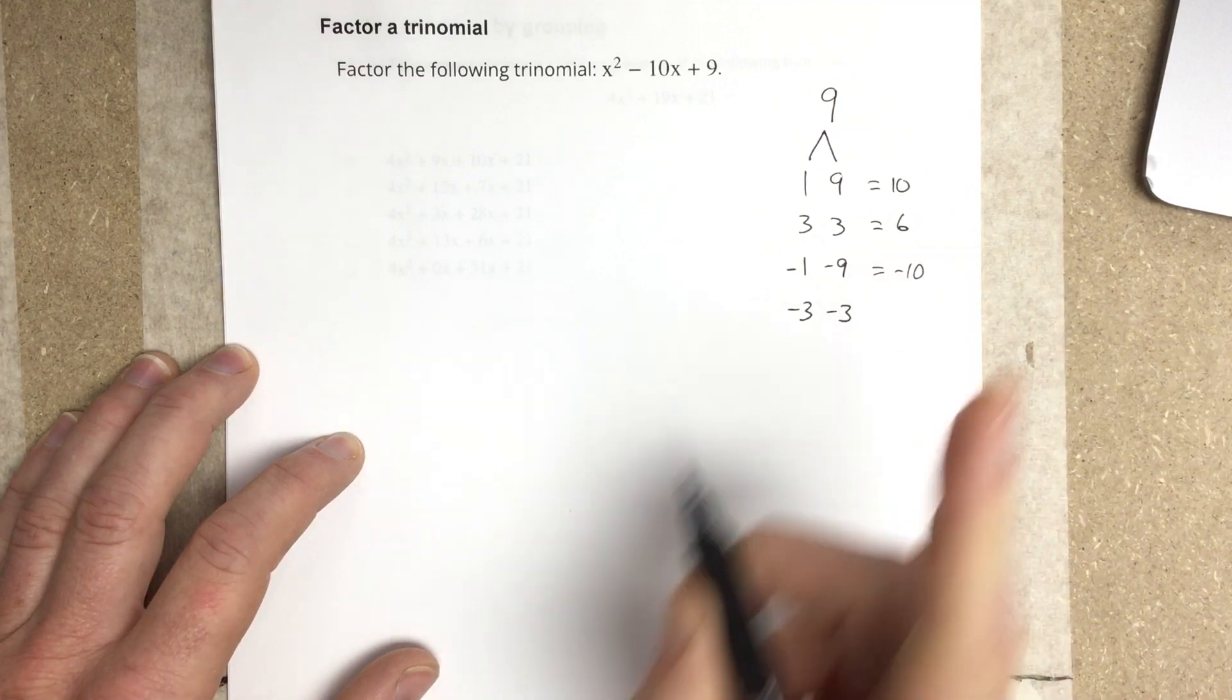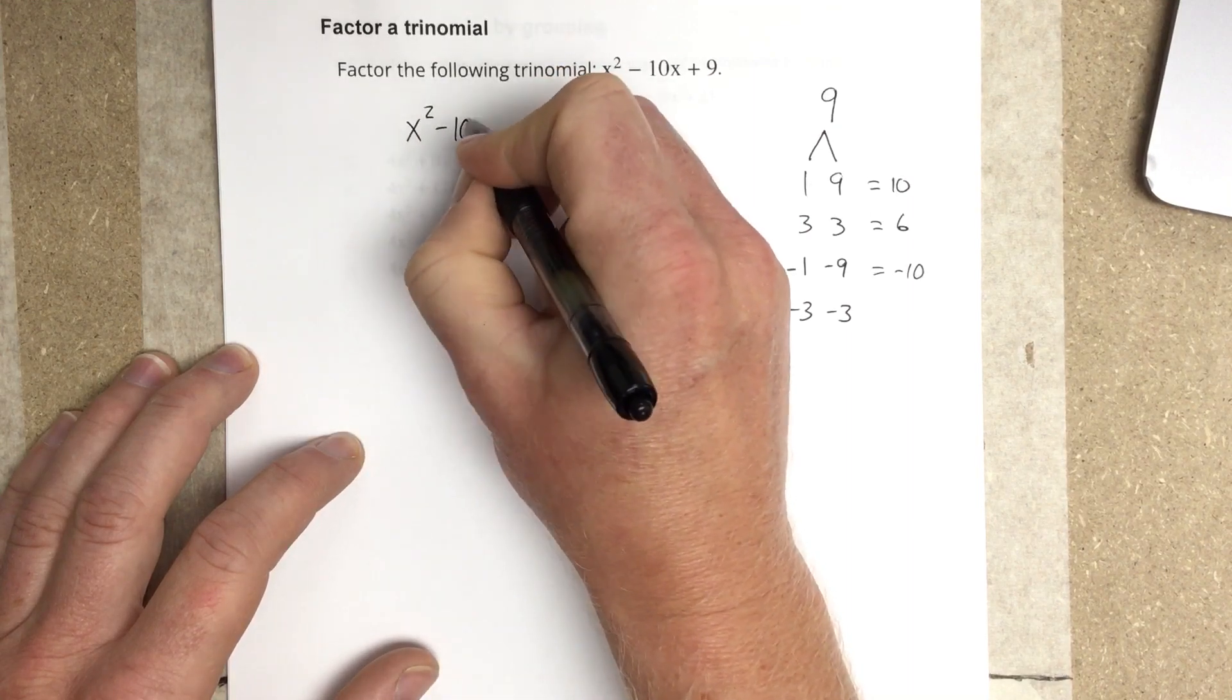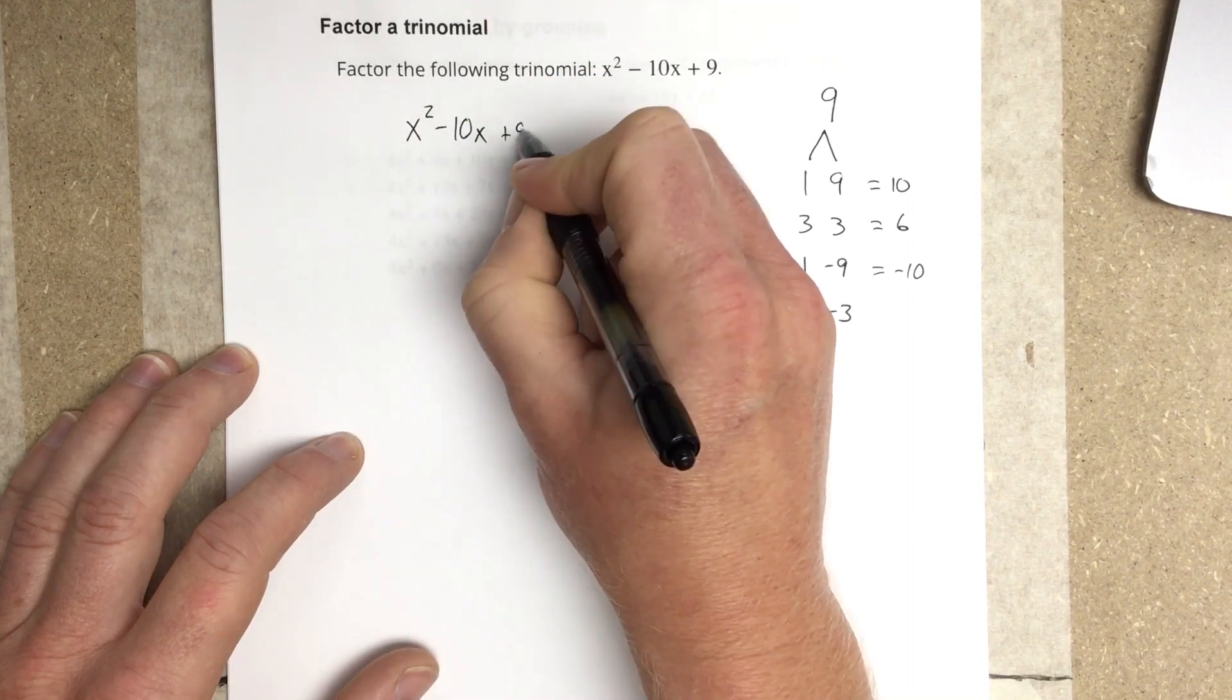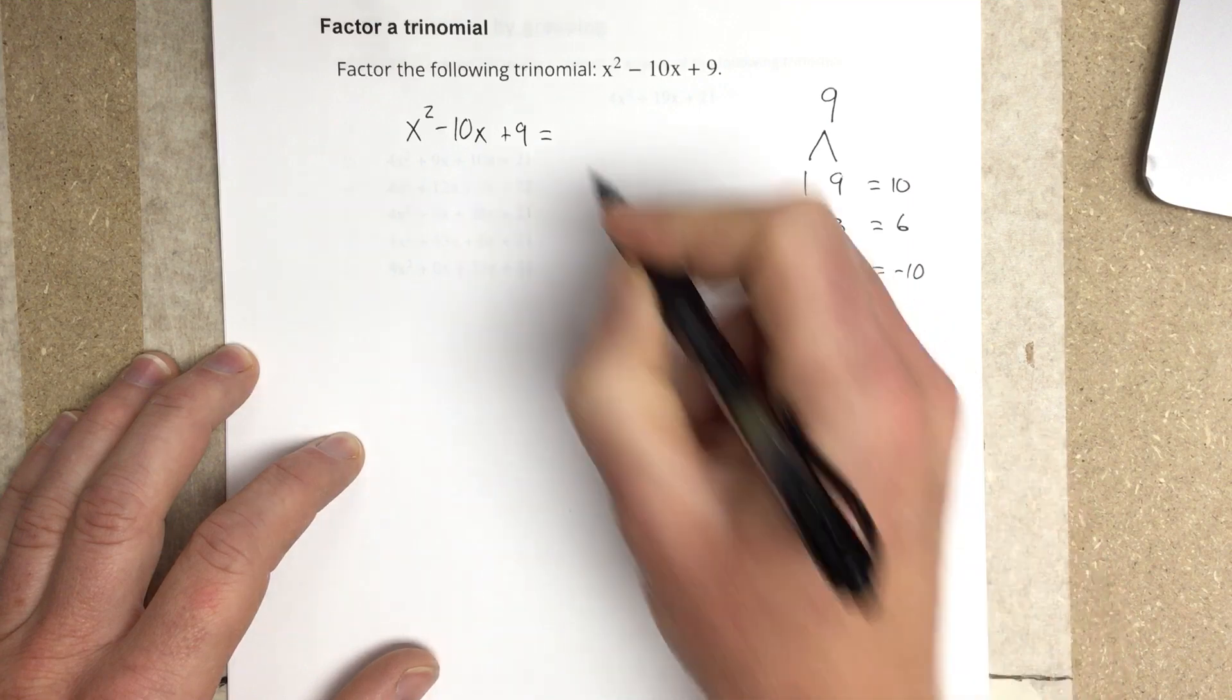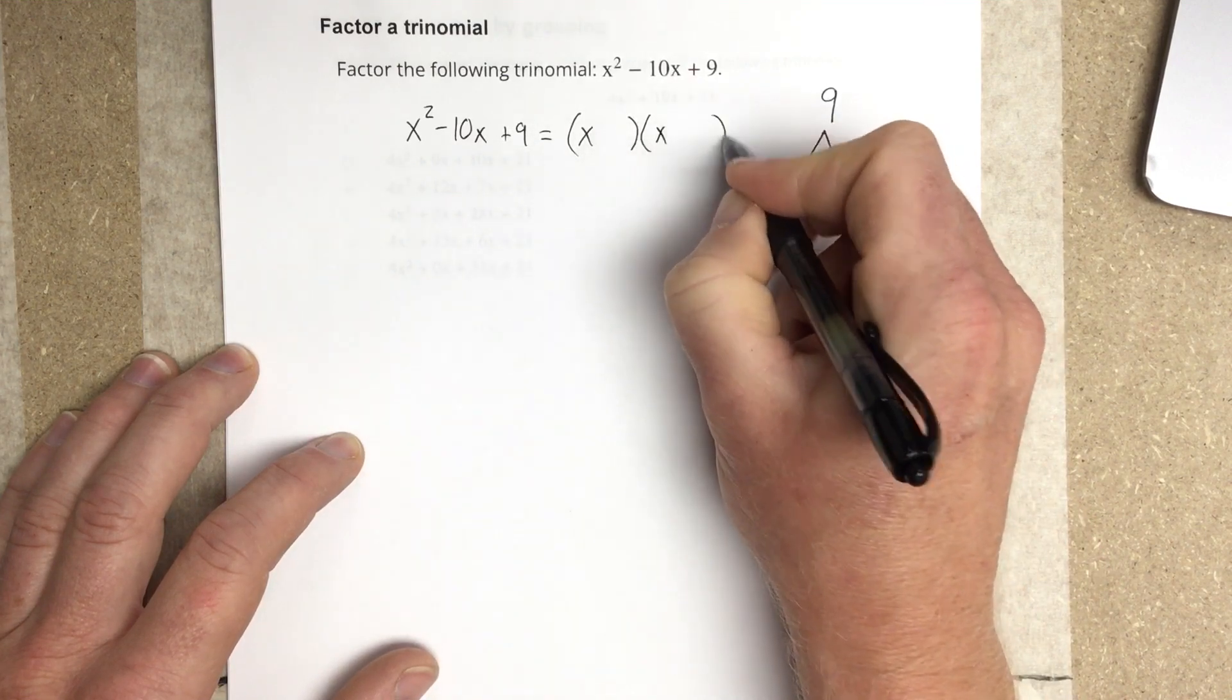So then we can go through and we can say x squared minus 10x plus 9 is equal to, in factored form, x, x. We split the x squared term.